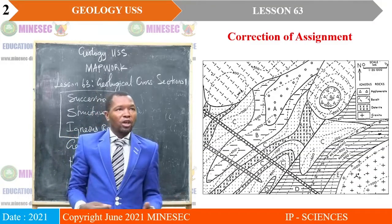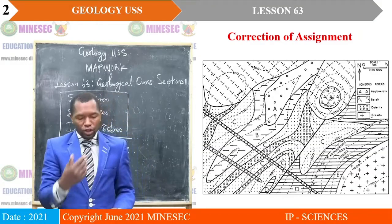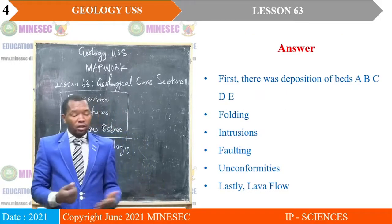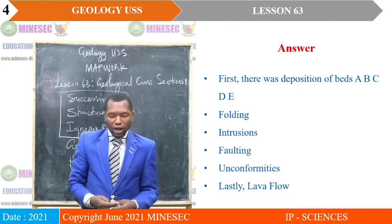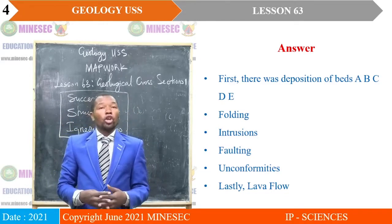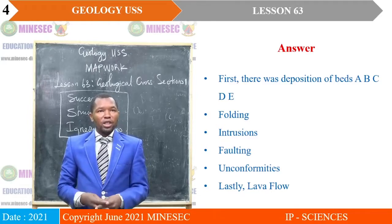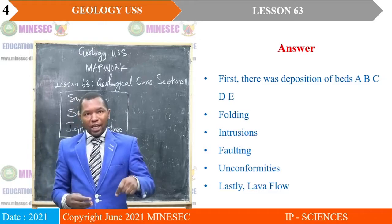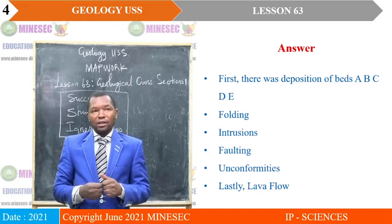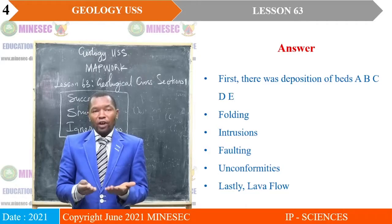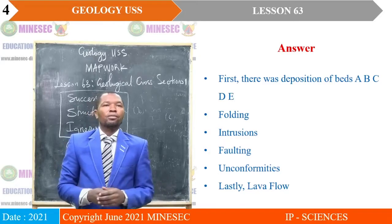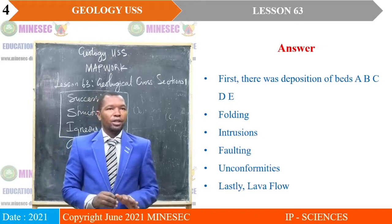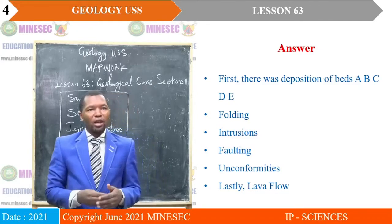Therefore, the first event in that area would have been the deposition of beds A, B, C, D, and E. Why begin with bed A? It is because bed A is the core bed of an anticline, and core beds of anticlines are older. So there was first of all the deposition of beds A to E, after which they were folded. There was folding.